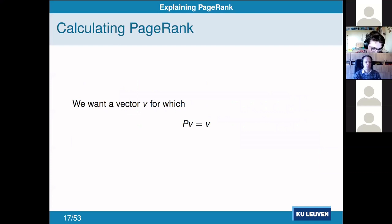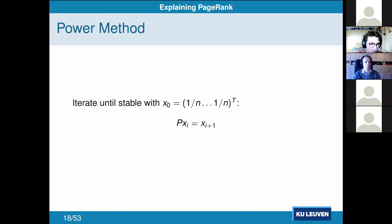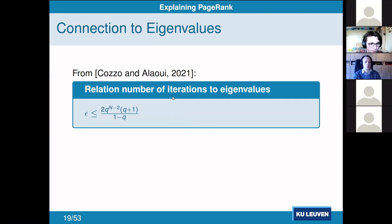We want the PageRank vector to be independent of where our web surfer starts — a vector v for which P * v = v, so the probability of being at any web page doesn't change after a step. This is just an eigenvector of P with eigenvalue one. Since our matrix will have hundreds of thousands of rows and columns, we use the power method: start with an equal probability of being anywhere, and iterate until x_i and x_{i+1} are close enough.